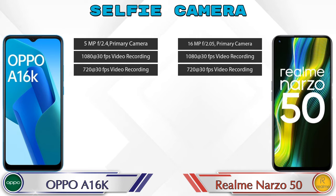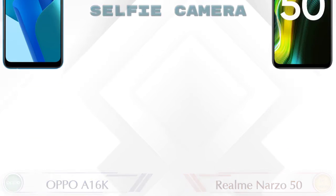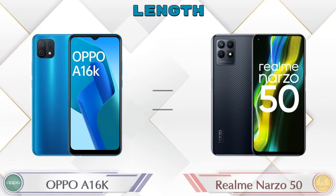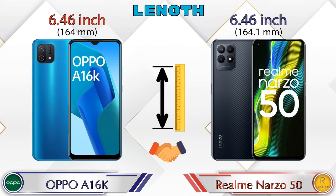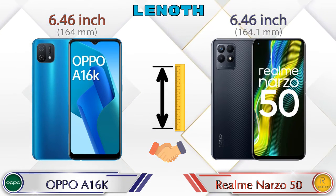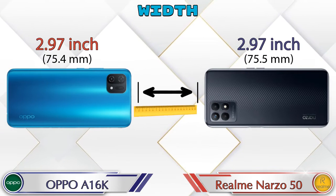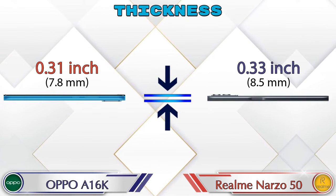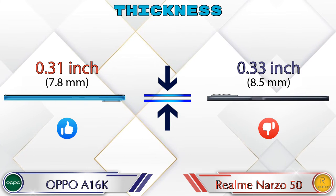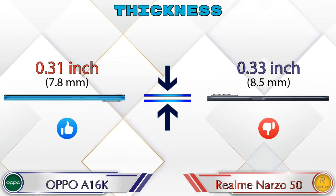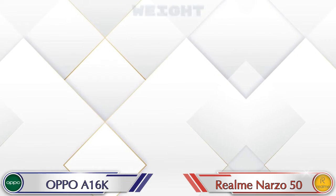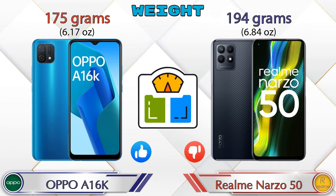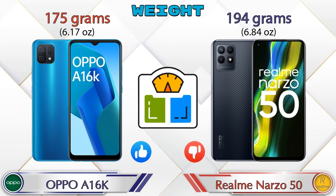For the front selfie camera, both phones have a single camera with three different features available. Regarding dimensions, both phones share the same length of 6.46 inches and the same width of 2.97 inches. Thickness: the A16k is 0.31 inches and the Narzo 50 is 0.33 inches. Weight: the A16k is 175 grams and the Narzo 50 is 194 grams, which is heavier than the A16k.